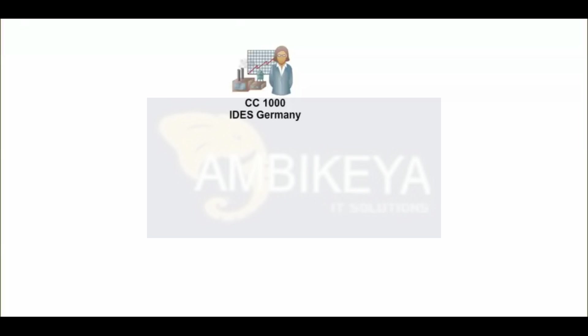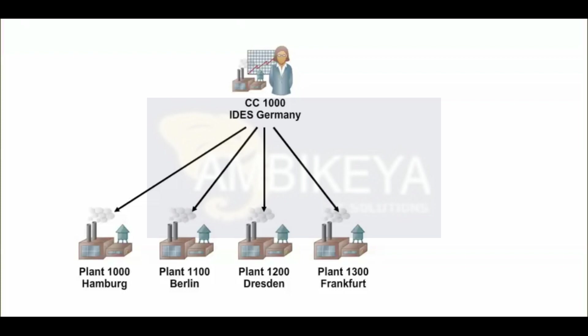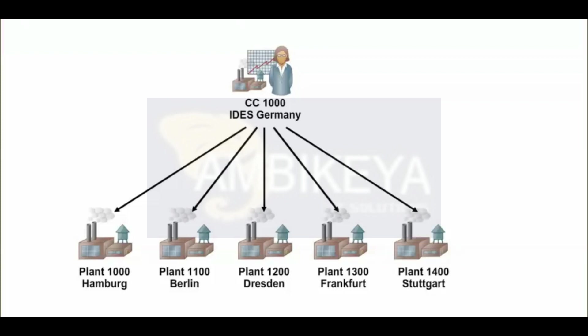However, one or more plants can be assigned to the same company code. Some of the plants included in IDES company code 1000 Germany are 1000 Hamburg, 1100 Berlin, 1200 Dresden, 1300 Frankfurt, and 1400 Stuttgart. All company code-relevant transactions from these plants are posted in company code 1000 because these plants are assigned to company code 1000.